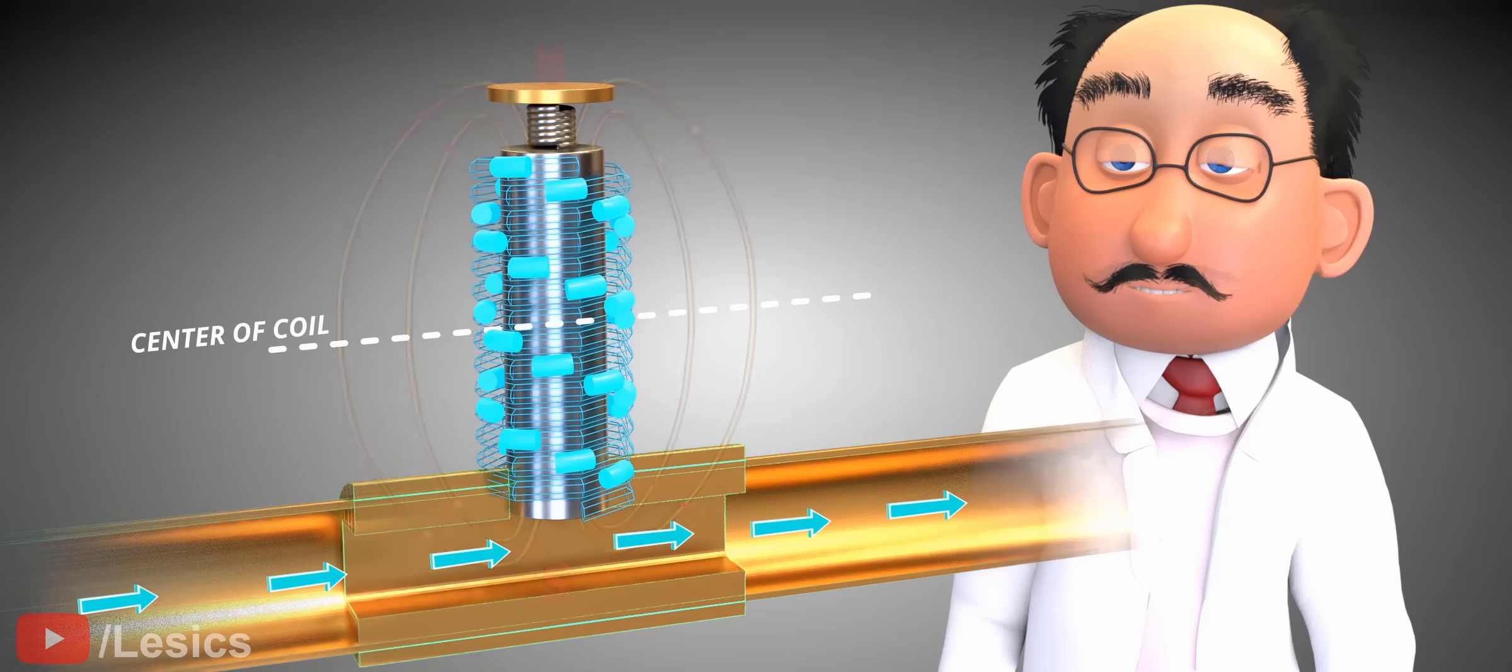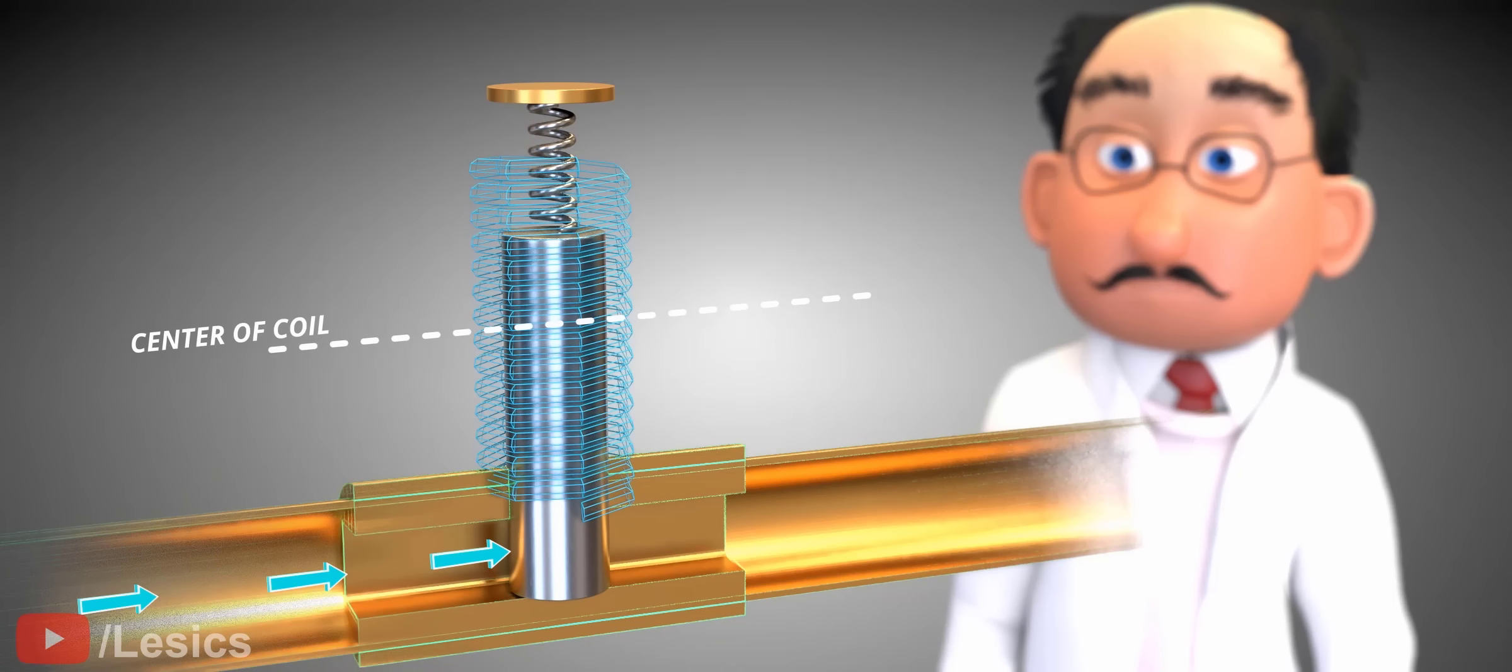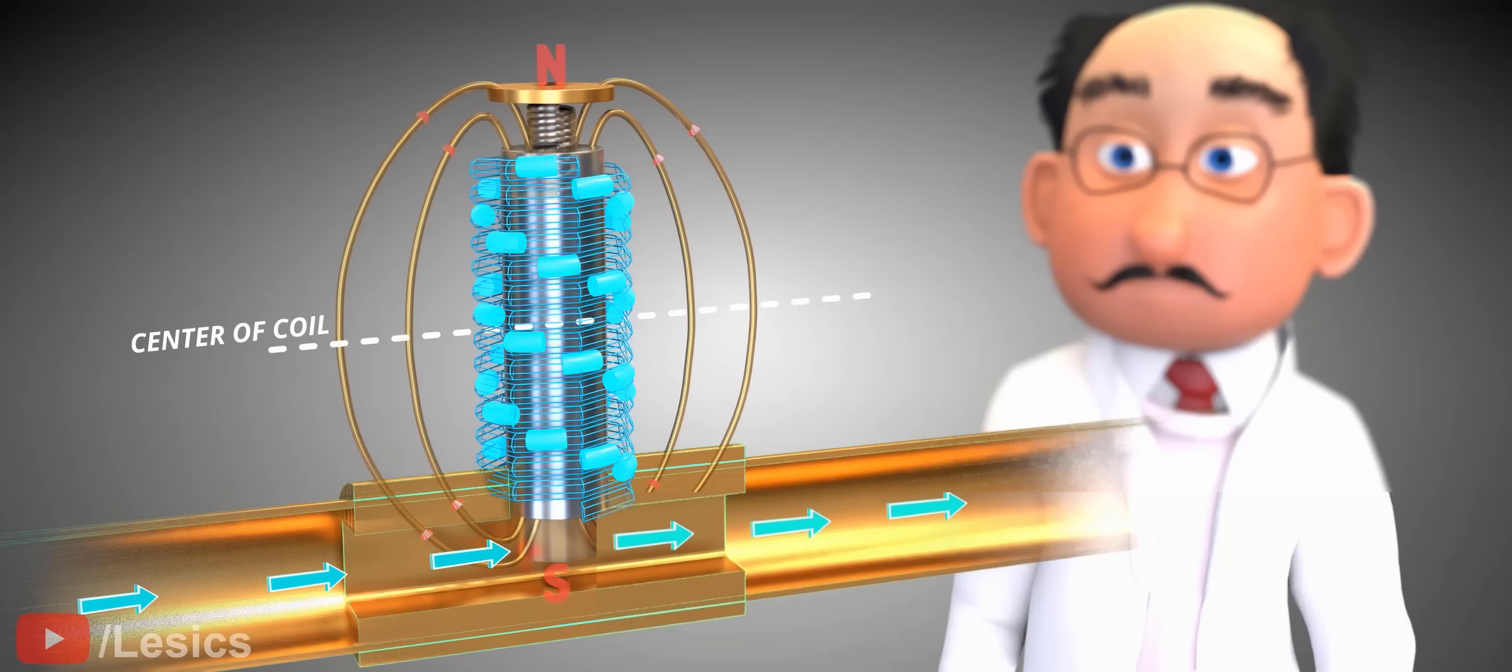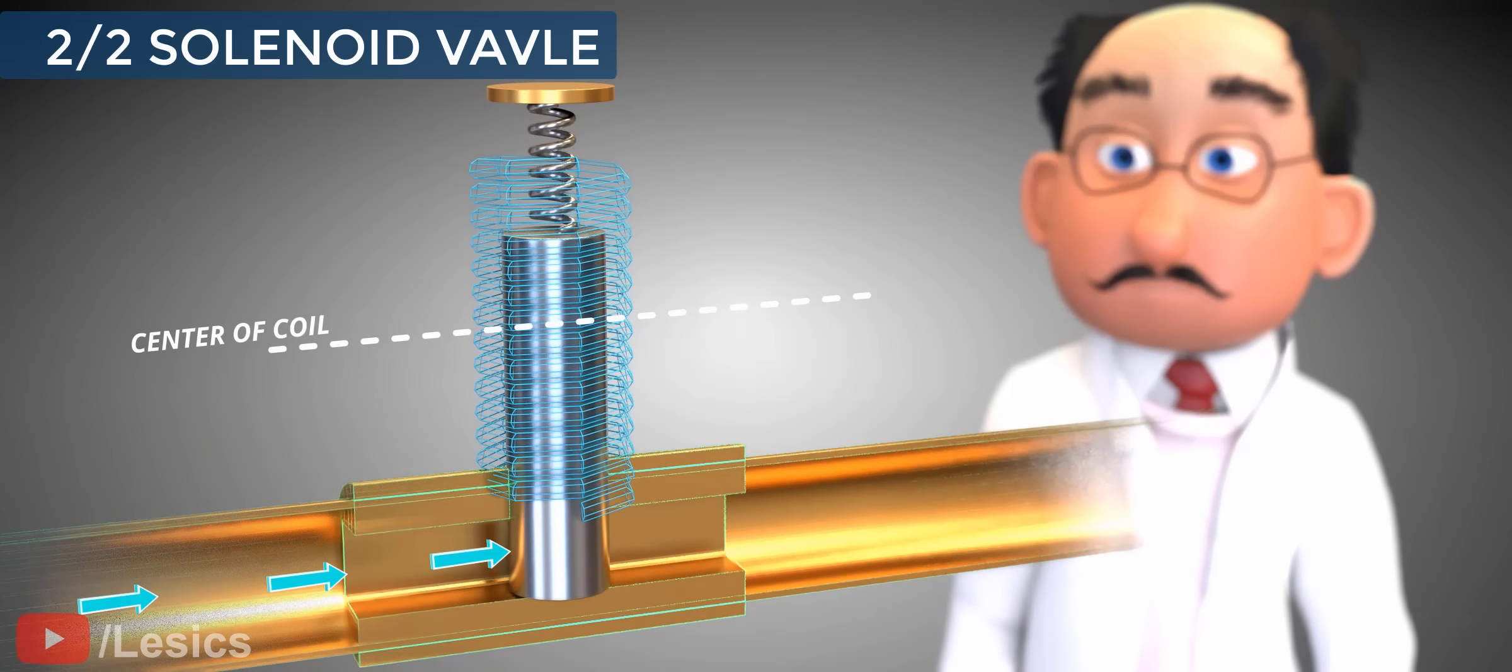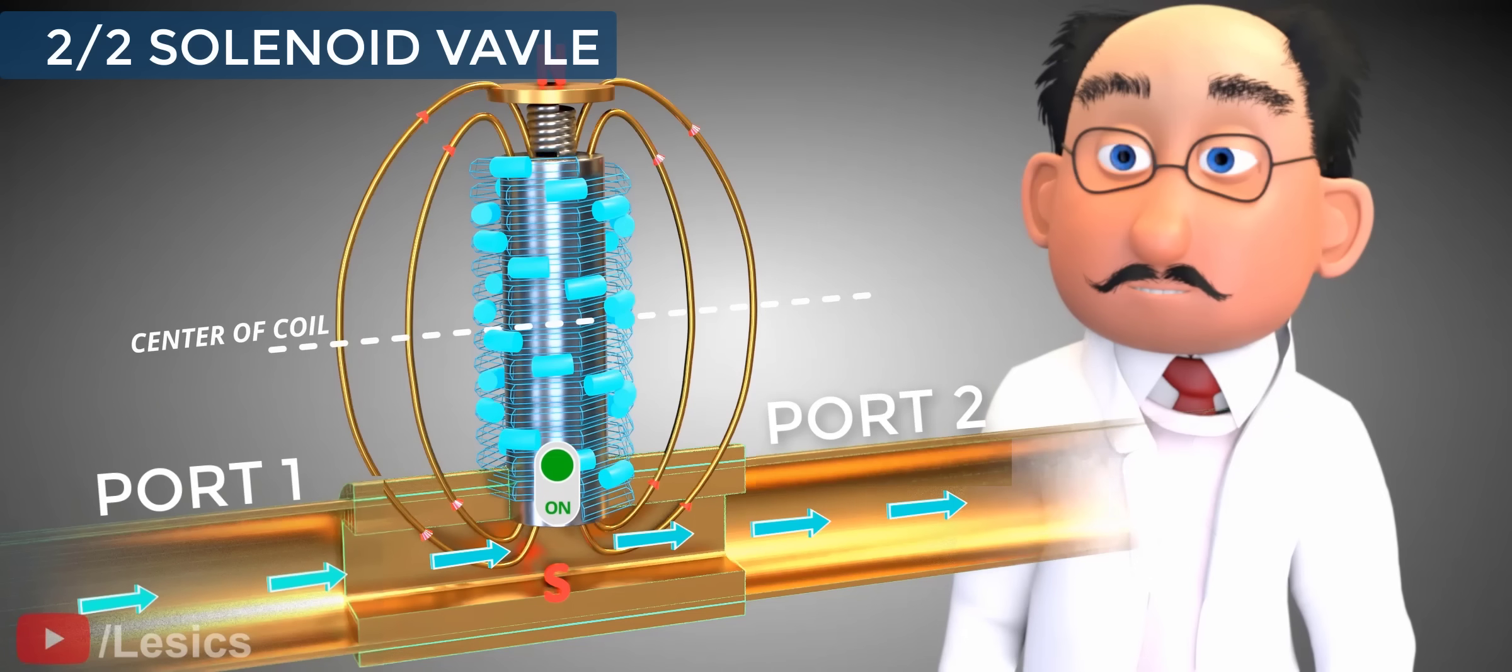When the coil is not energized, obviously the compressed spring will close the valve immediately. With this design, we have achieved a simple 2x2 solenoid valve. It's called a 2x2 because of its two ports and two operation states, on and off.